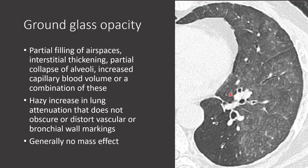Ground glass opacity could also be the result of interstitial thickening — lines within the lung that are too small to resolve on CT and so blend together to create a hazy appearance of the lung parenchyma. Additional causes include partial collapse of alveoli (incomplete atelectasis) or increased capillary blood volume. Typically we attribute ground glass opacities to either partial filling of alveolar air spaces or interstitial thickening.